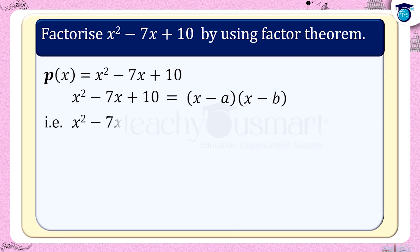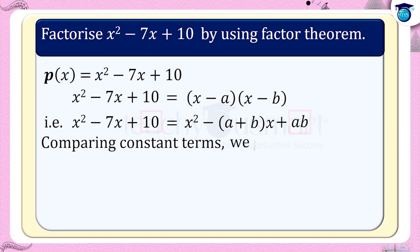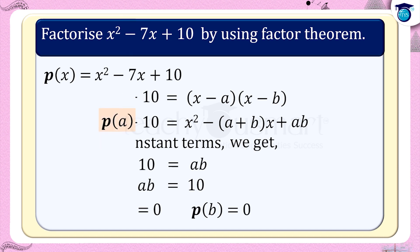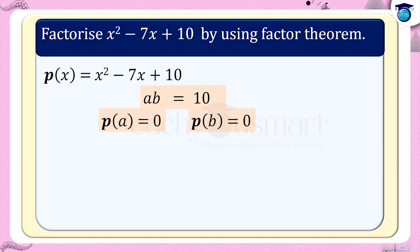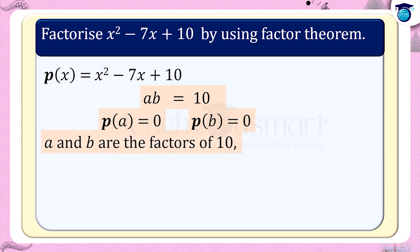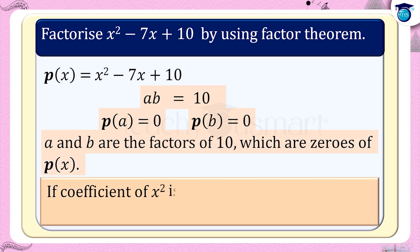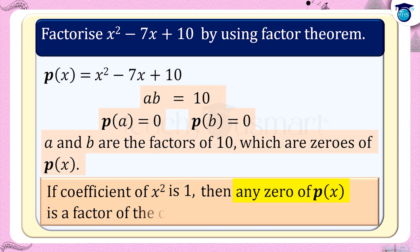That is, x squared minus 7x plus 10 equals x squared minus (a plus b) multiplied by x plus ab. Comparing constant terms, we get 10 equals ab, that is ab equals 10. We know p(a) equals 0 and p(b) equals 0, so it is clear that a and b are the factors of 10, which are the zeros of p(x). That is, if the coefficient of x squared is 1, then any zero of p(x) is a factor of the constant term.